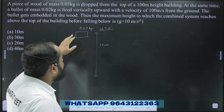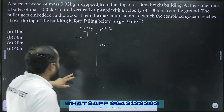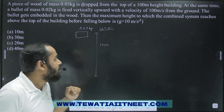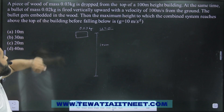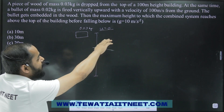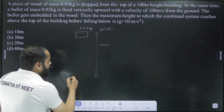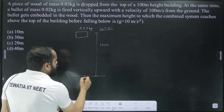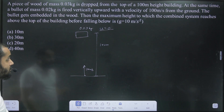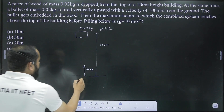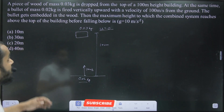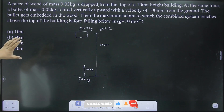At the same time — meaning the time interval between the two projectiles is zero — a bullet of mass 0.02 kg is fired vertically upward with a velocity of 100 meters per second from the ground. So the bullet with velocity 100 m/s is being fired upwards and its mass is 0.02 kg.